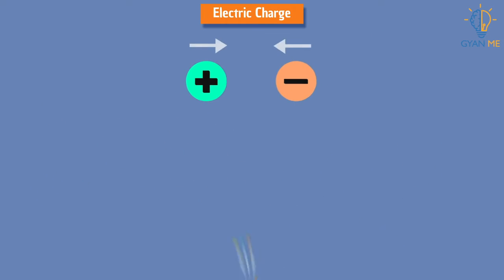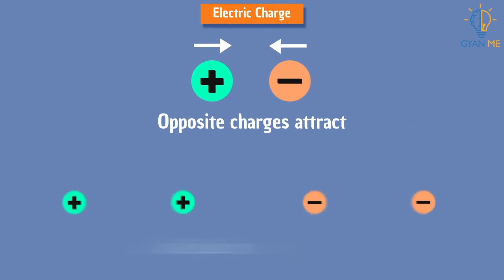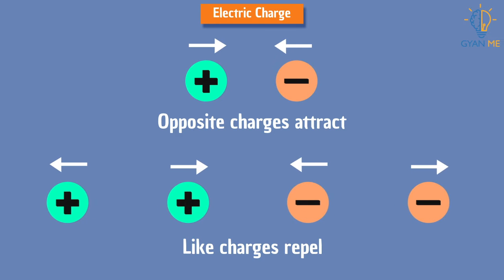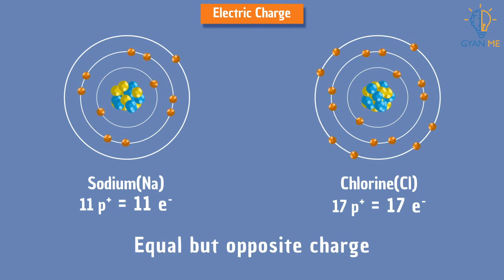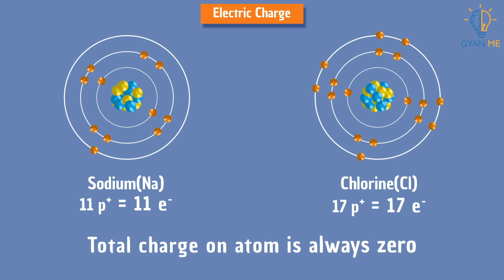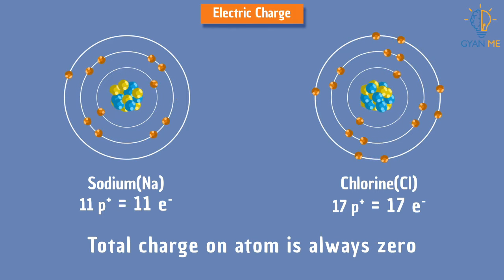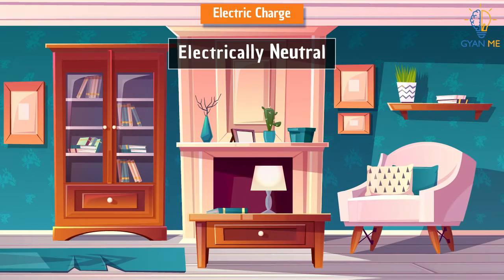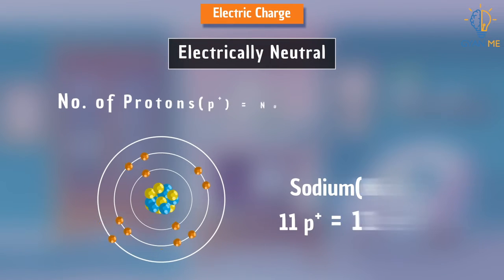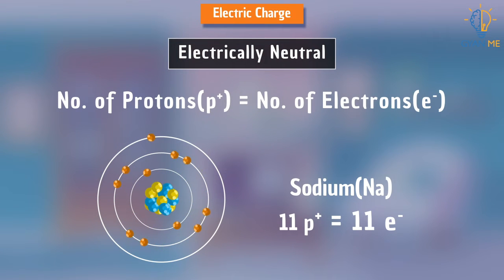We know that opposite charges attract each other and like charges repel each other. We also know that each atom has an equal number of protons and electrons, which have equal but opposite charge. Hence, the total charge on an atom will always be zero. Most things that we see around us are electrically neutral, as they have an equal number of protons and electrons, so they don't exert a force on each other.